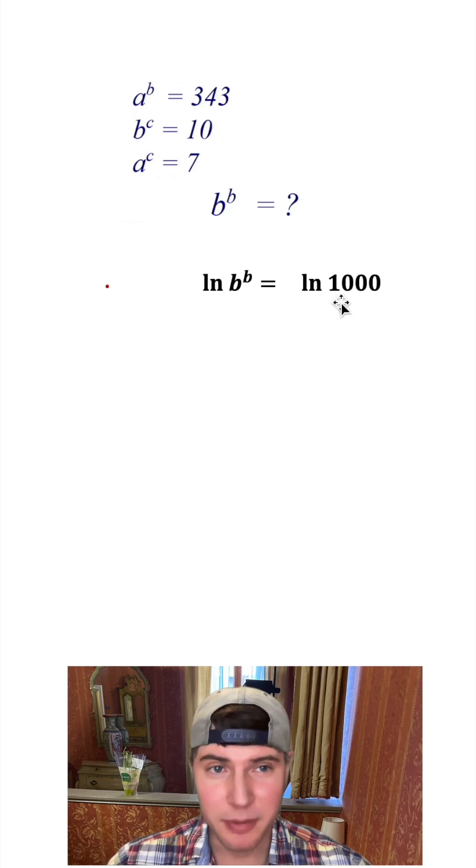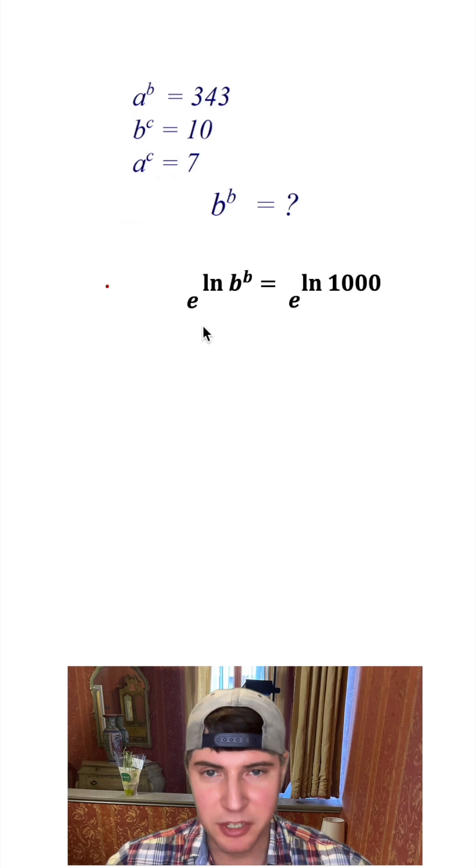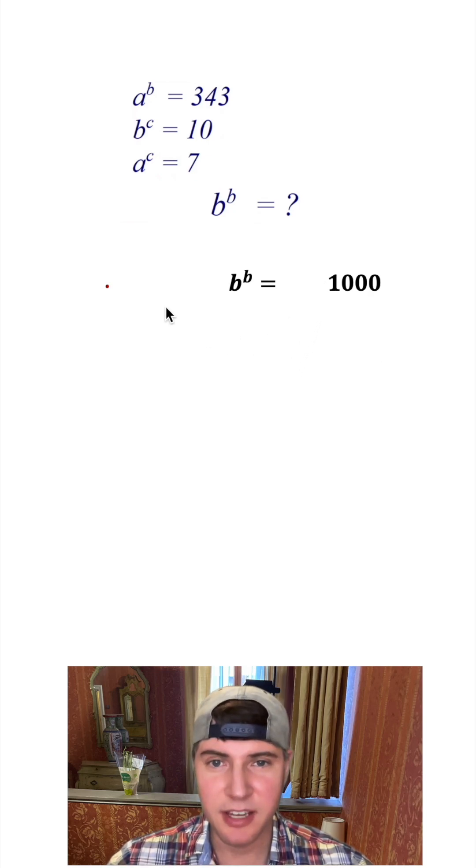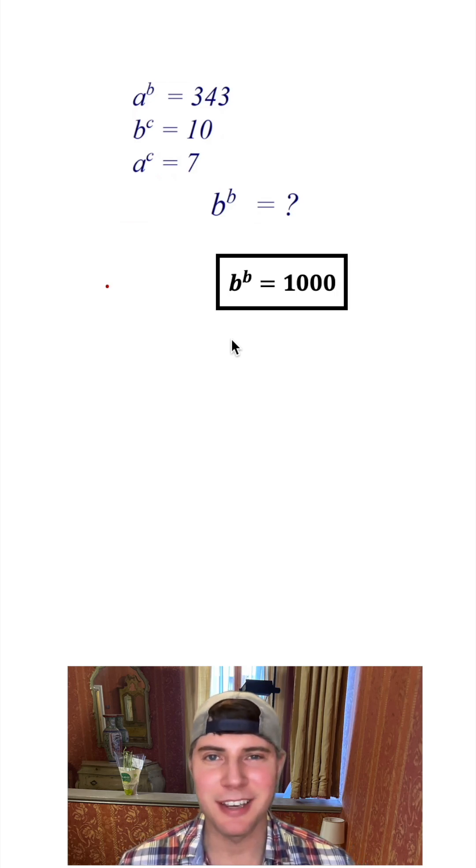The only way that two logs can be equal to each other is if the stuff that's inside is equal to each other. So we can say b to the b is equal to 1,000. Or if you prefer to think of it this way, you can do both sides e to the power of both those sides. And then one of the properties of natural logs is these cancel. But either way you think of it, we have b to the b, and it's equal to 1,000. How exciting.